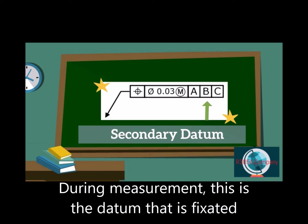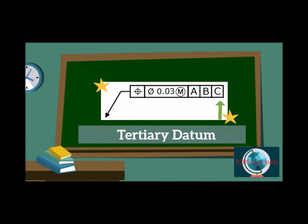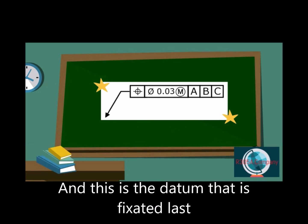During measurement, this is the datum that is fixated after the primary datum, and this is the datum that is fixated last.